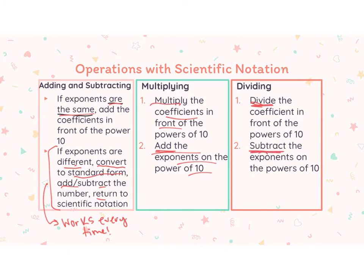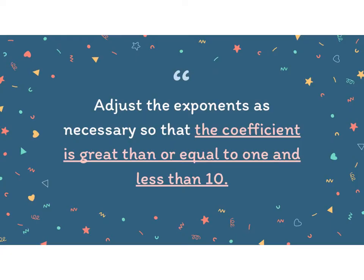One thing to keep in mind: we always want to make sure that we adjust our exponent so that the coefficient is greater than or equal to 1 and less than 10. That's so that we have only one digit in front of the decimal point.